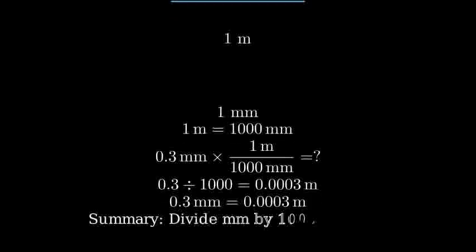Here's a quick summary. To convert millimeters to meters, remember that 1 meter equals 1,000 millimeters, and simply divide the millimeter value by 1,000.